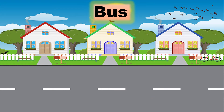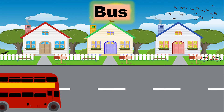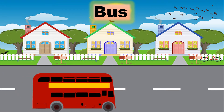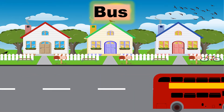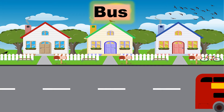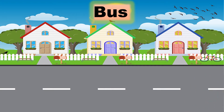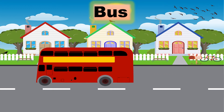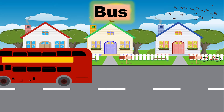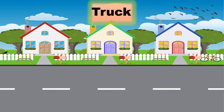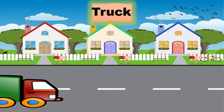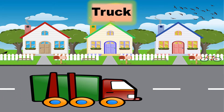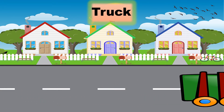It is bus. A lot of people can travel together in a bus. Buses can be used to travel from one city to another city as well as within the city, for example, to school, office or some other place within the city. Truck. It is used to carry loads from one city to another city.